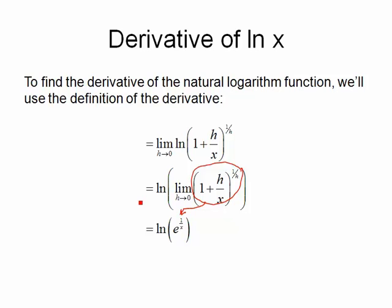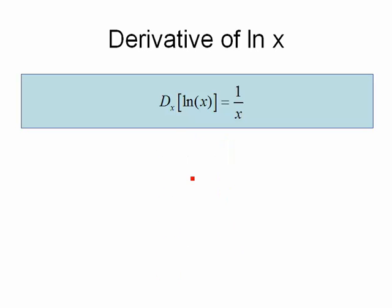Now if I go ahead and take the ln of e to the 1 over x, the natural logarithm and the e power will cancel each other out because they're inverses of each other. And that leaves me with 1 over x, meaning that the derivative of the natural logarithm function is 1 over x. So I've gone ahead and I've written that out right here.